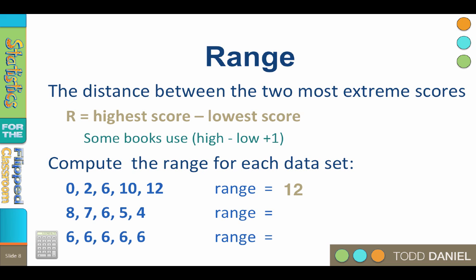Twelve. How about the second data set? Four. And the third data set? Zero. Here are three data sets, each with the same mean of six, but wildly different ranges. There is much more variability in the first data set than in the third.